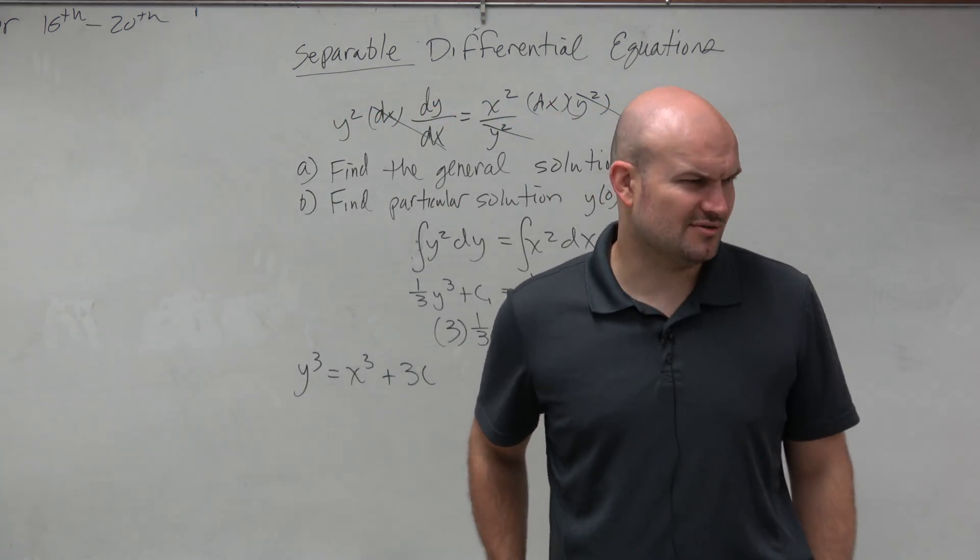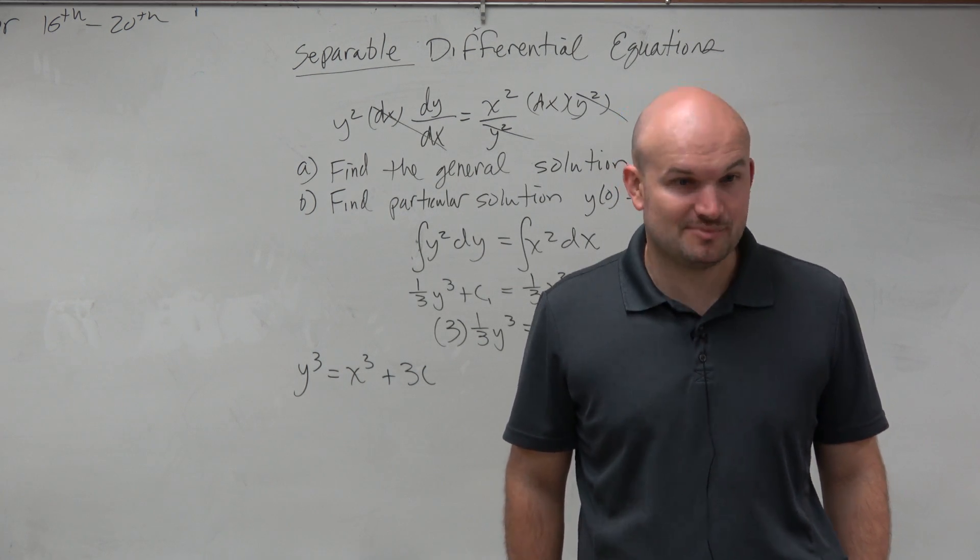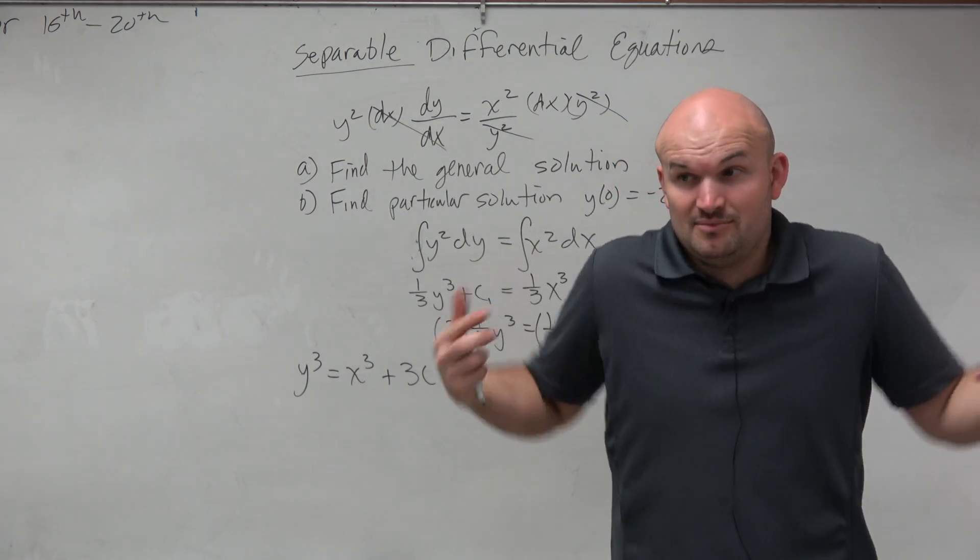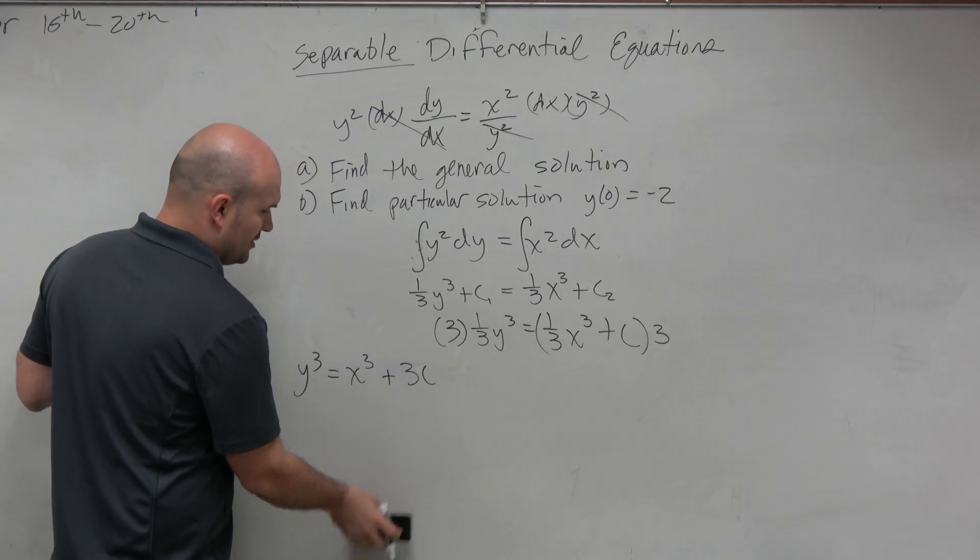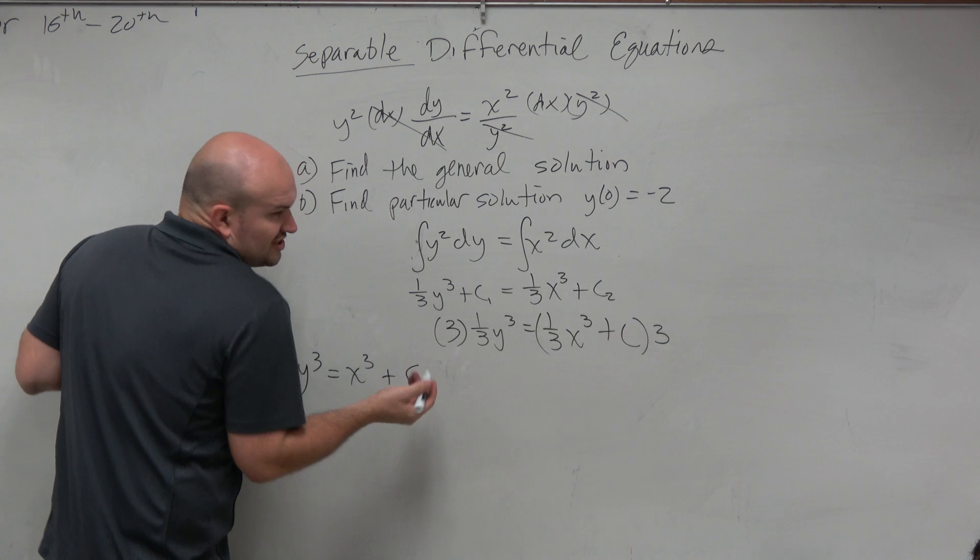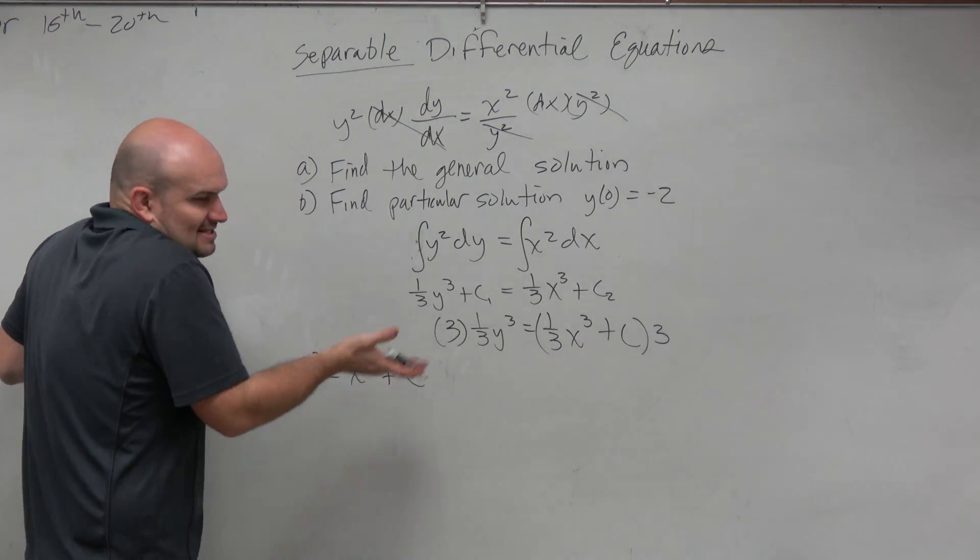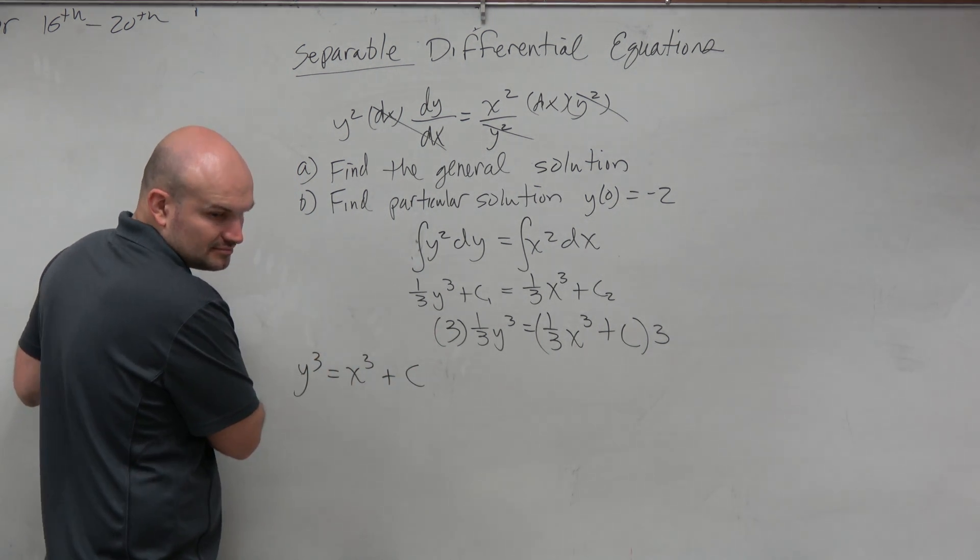Now, does it really matter what 3c is? Because 3c is just going to be c. It kind of like absorbs that c. So we can just really call this 3c, but in reality, it's just a constant. It doesn't matter if it's a constant multiplied by a 3 or not.